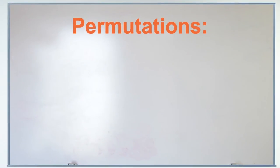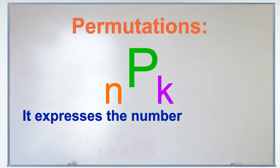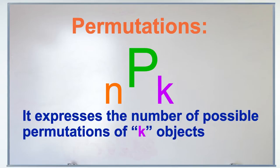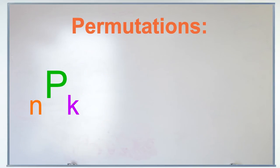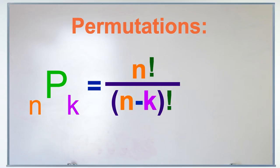The permutation formula is written as nPk, which is used to express the number of possible permutations of k objects from a set of n. It can also be written n factorial over the quantity n minus k factorial.